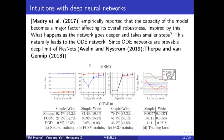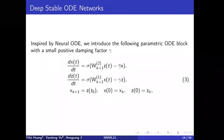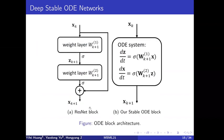Inspired by this, we introduce our parametric ODE block with a small damping factor gamma. Different from the original neural ODE, we directly use two coupled equations to form an ODE system over X and Z, compared with the original ResNet block. In our stable ODE block, we take input X_k, solve the ODE system, and take X_{k+1} as the output. We can prove that our ODE block is stable under certain conditions.